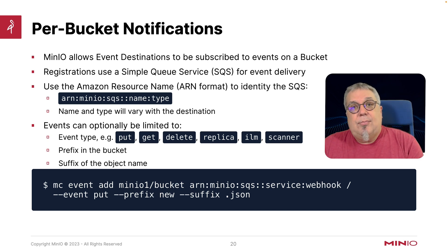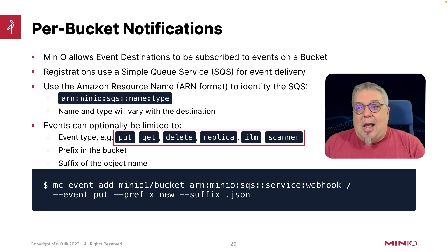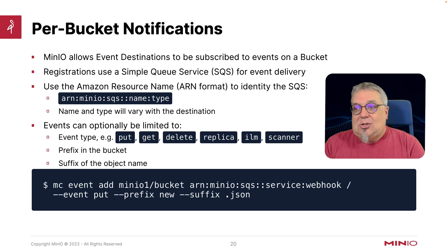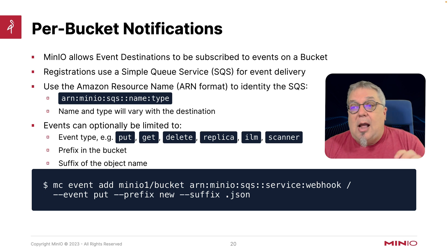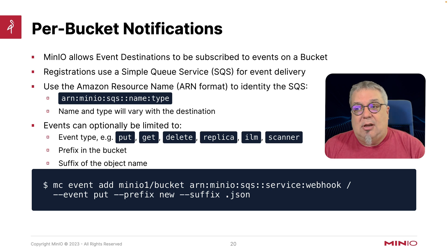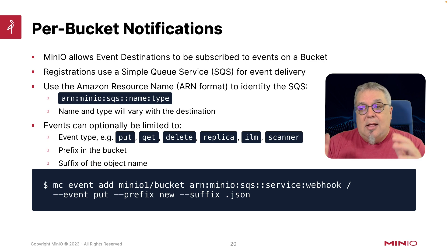You can limit the event types if you want. There are put, get, and delete events. You also have replica, ILM, and scanner types — that's going to be put star, create star, access star, remove star, replica star, ILM star. And then you can optionally put in the prefix in the bucket that you want to watch, or the suffix. If there are only certain types of objects or certain object suffixes that you want to watch for, that's where you would set this up.